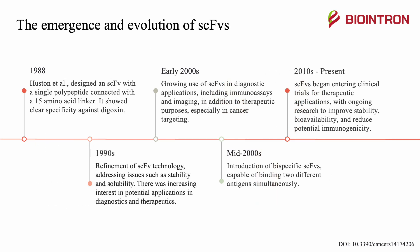One of the first research papers about SCFVs was published in 1988 by Huston and their team. They designed an SCFV with a single polypeptide connected with a 15-amino acid linker, and it showed clear specificity against digoxin.